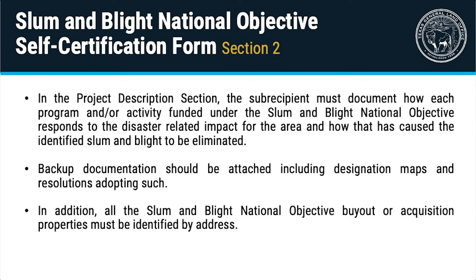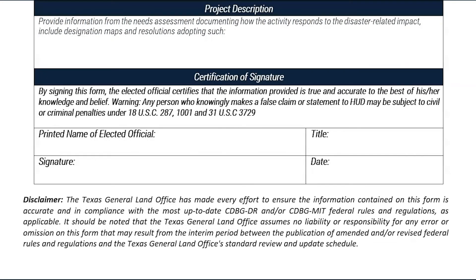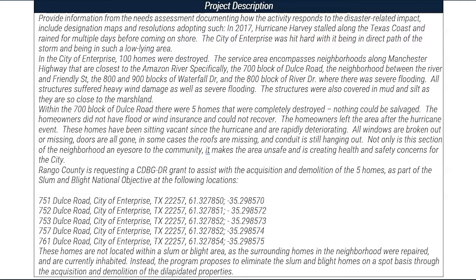In addition, all of the slum and blight national objective buyout or acquisition properties must be identified by address. For our example, we will insert a fictitious scenario. In this scenario, there are five homes that were heavily flooded and suffered severe wind damage during Hurricane Harvey in the city of Enterprise. There is an explanation of how the slum and blight national objective funding is needed to prevent future health and safety risks, along with a fictitious location of the city and a history of flooding in the area.